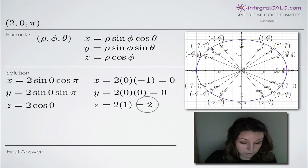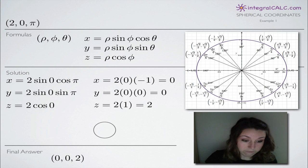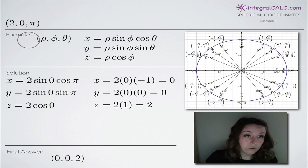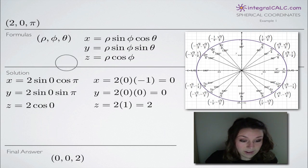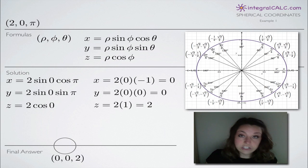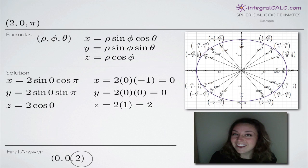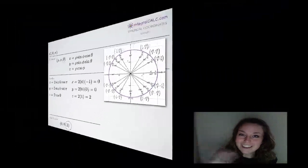So when we put those three together, we get our final answer: 0, 0, 2. That's how we convert spherical coordinates in the form rho, phi, theta to Cartesian or rectangular coordinates in the form x, y, z. I hope that helped, and I'll see you in the next video. Bye!